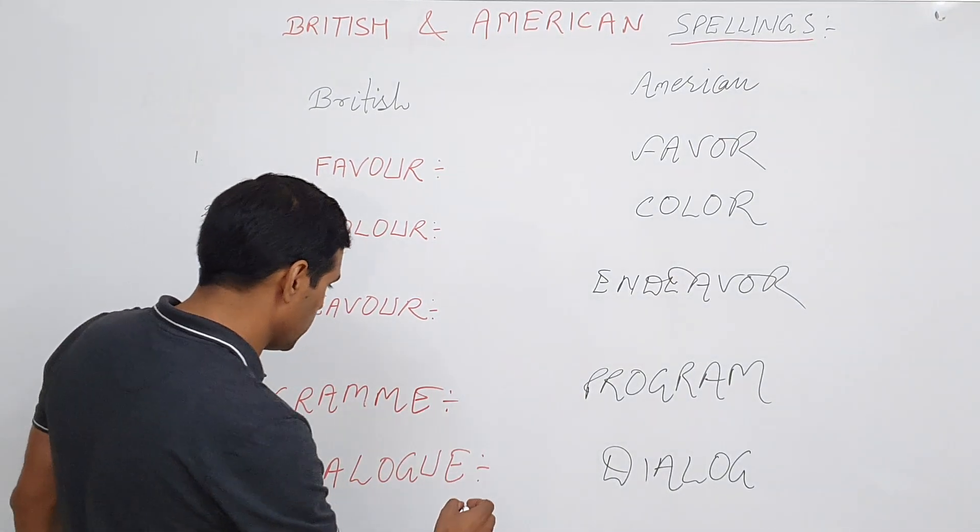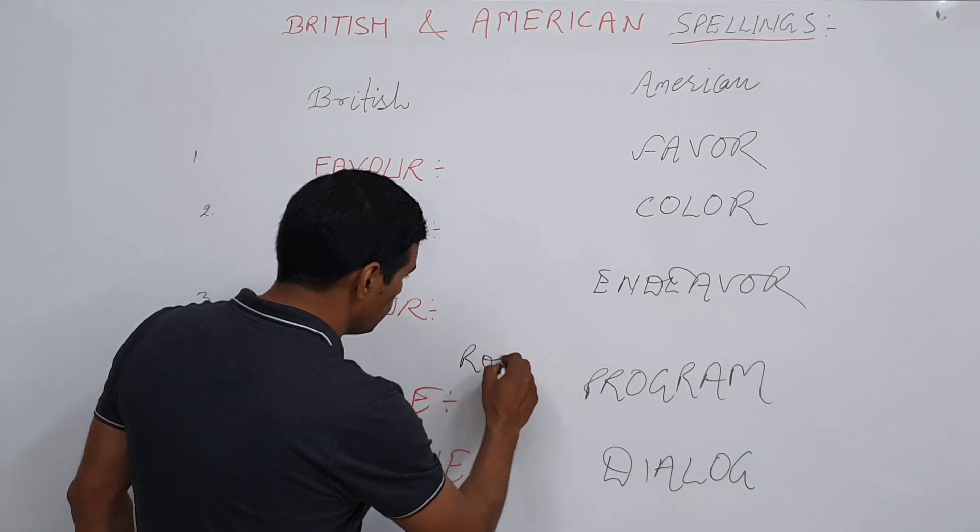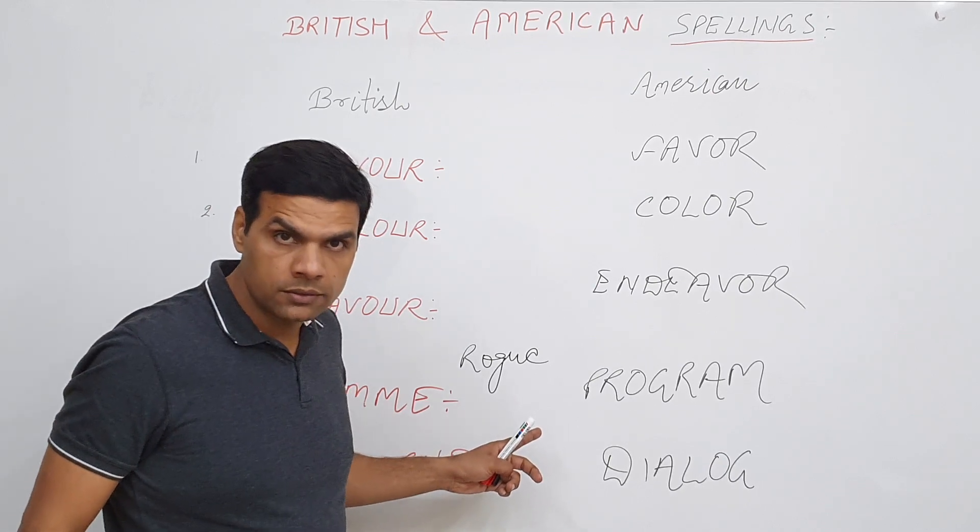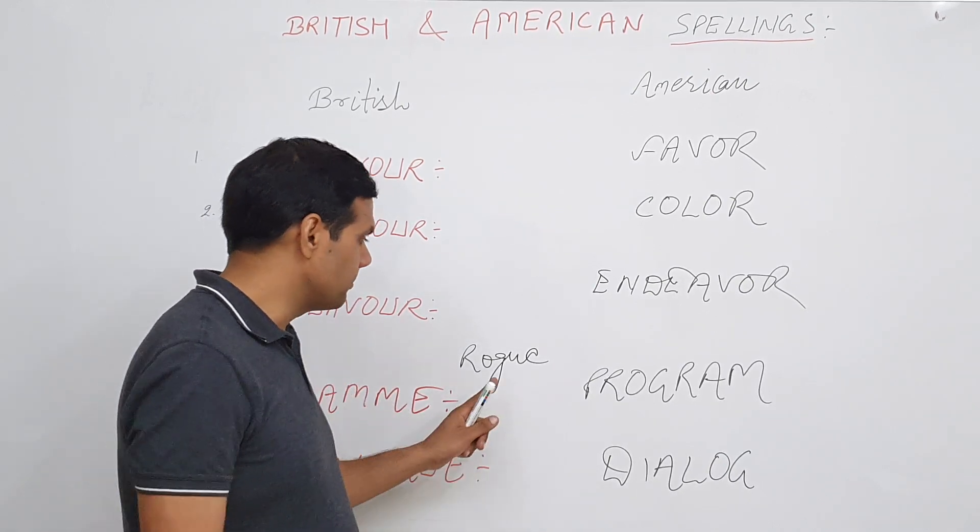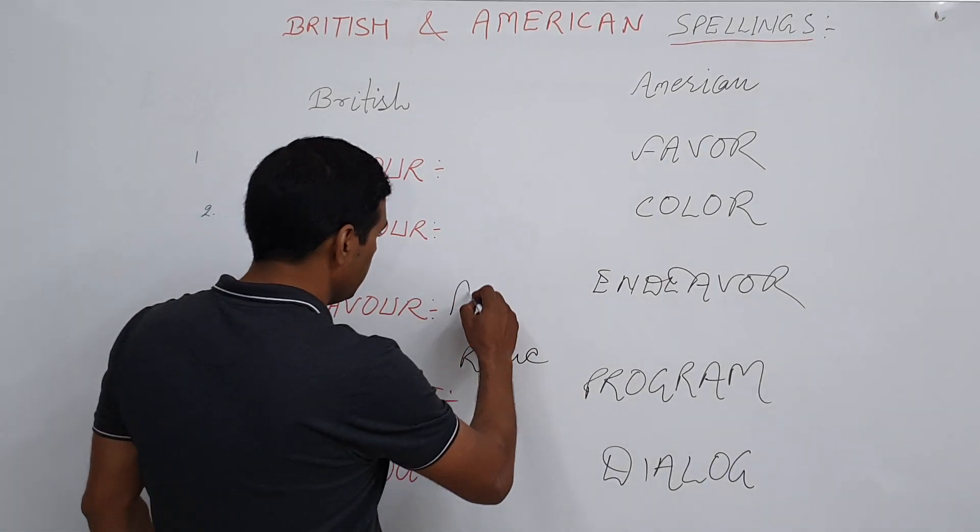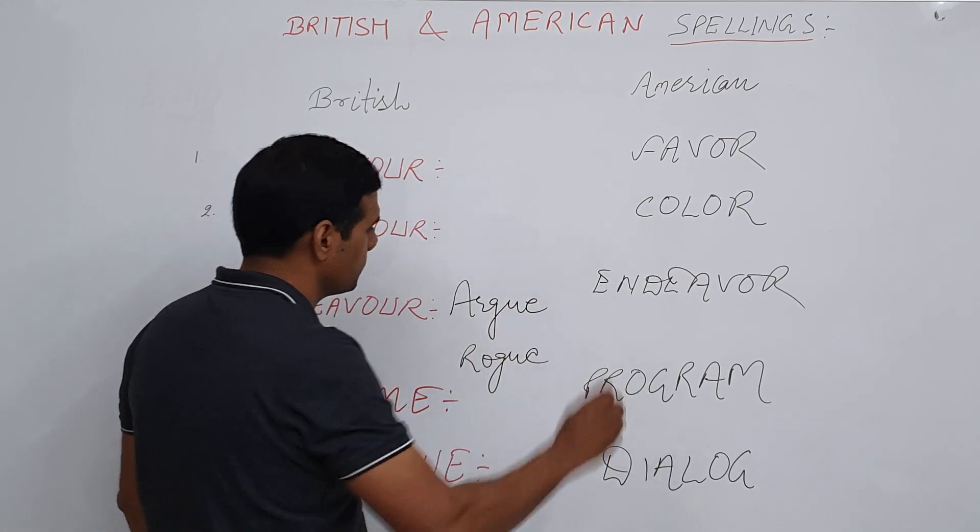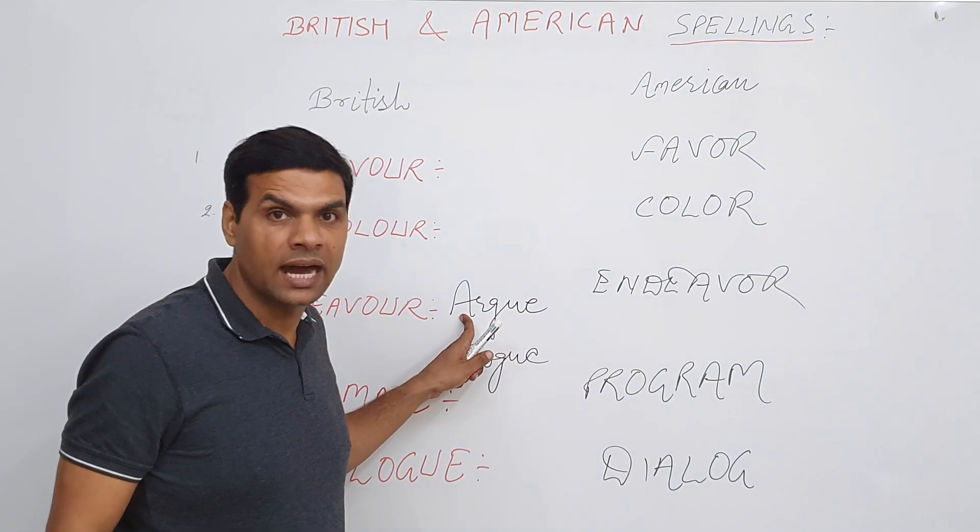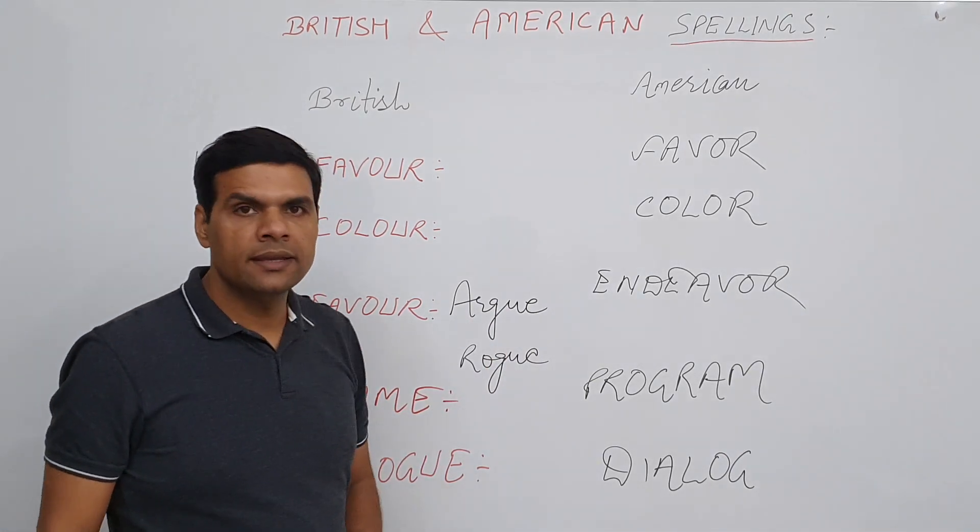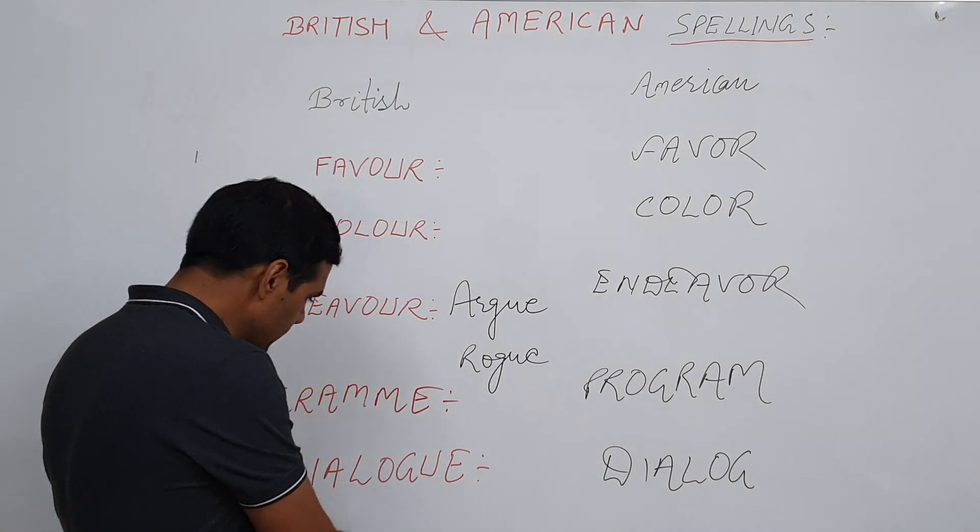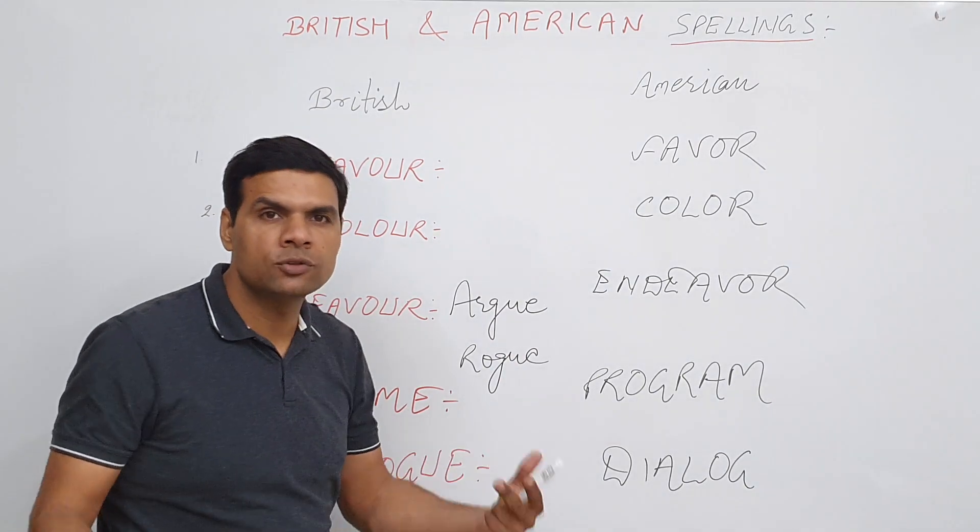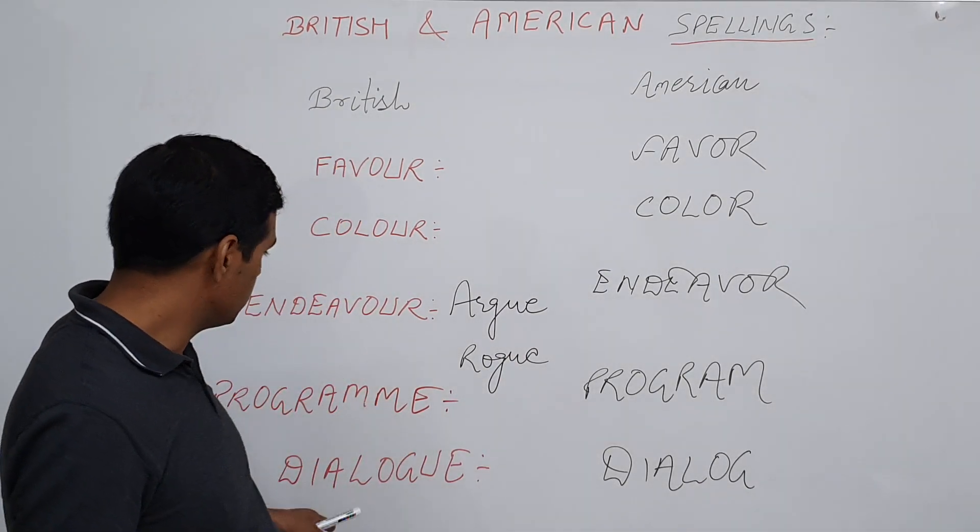Rogue means evil or bad—for example, a rogue state, a rogue human being. Then there is another word: A-R-G-U-E, but this is not spoken as 'arg', this is 'argue'. But rogue and dialogue. Which is why the Americans say that when it has to be spoken as dialogue, not dialogoo, so why bother using 'U' and 'E'? Which is why they have dropped them.